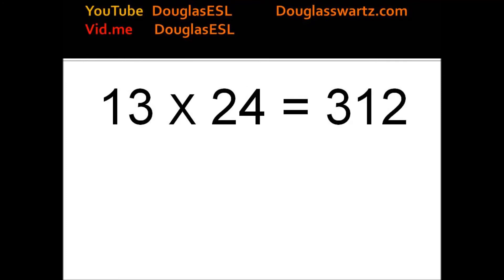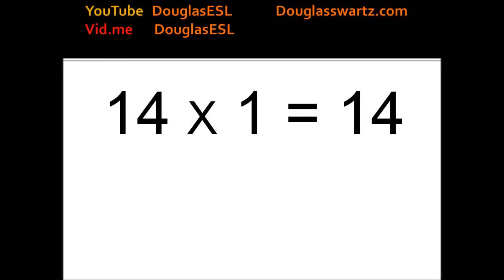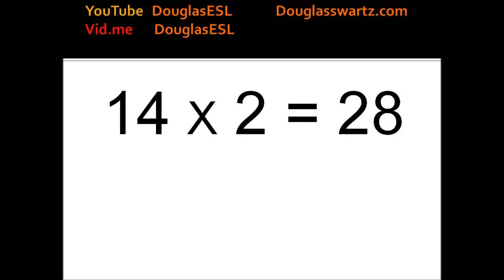13 times 24 equals 312. 13 times 25 equals 325. 14 times 1 equals 14. 14 times 2 equals 28. 14 times 3 equals 42.